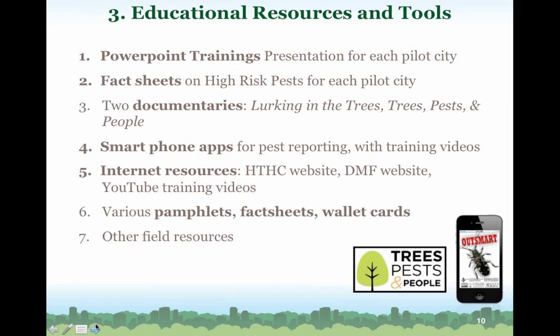It's worth noting that each of the six components takes on a slightly different emphasis in each of our four pilot cities. Tree health monitoring and risk assessment has factored fairly big in Boston, while partnerships is factoring very big in New York. Our educational resources and tools component offers a number of things, most importantly our PowerPoint trainings. We've pooled together lots of good information on each pest that may affect your particular locality, designed to be delivered by anyone with even basic knowledge of trees — school teachers, community groups, boy scout leaders.